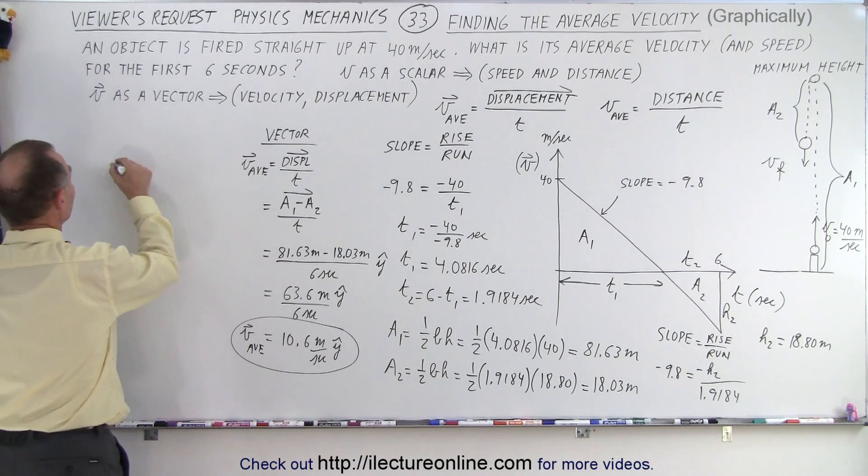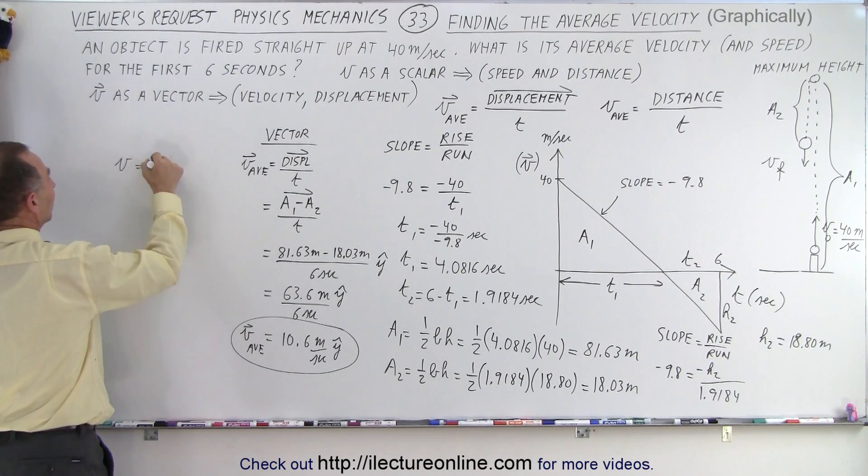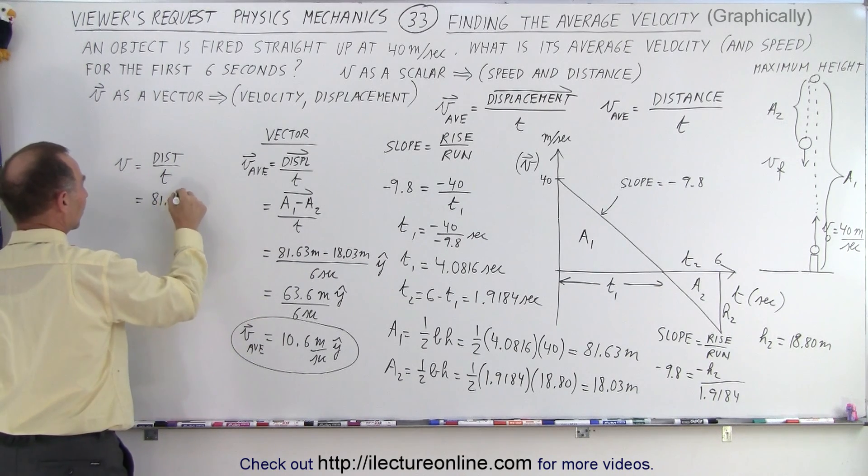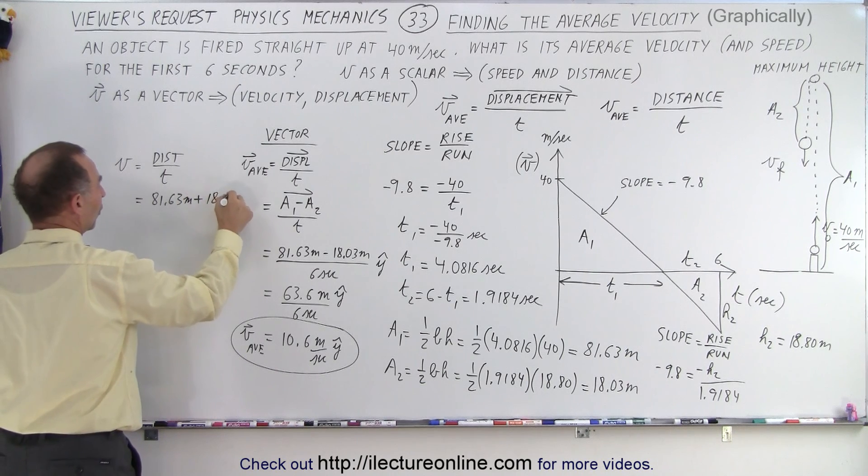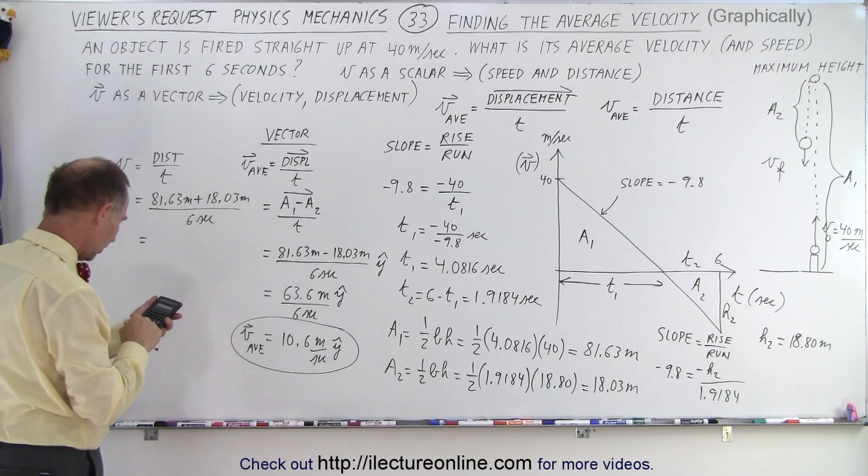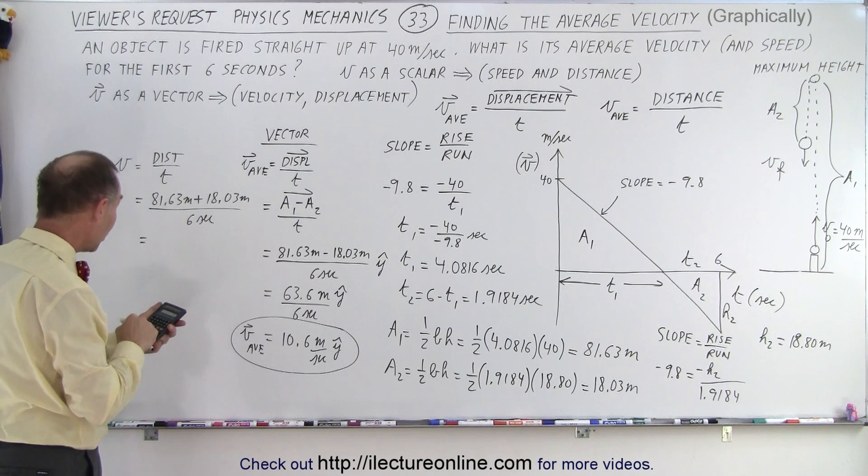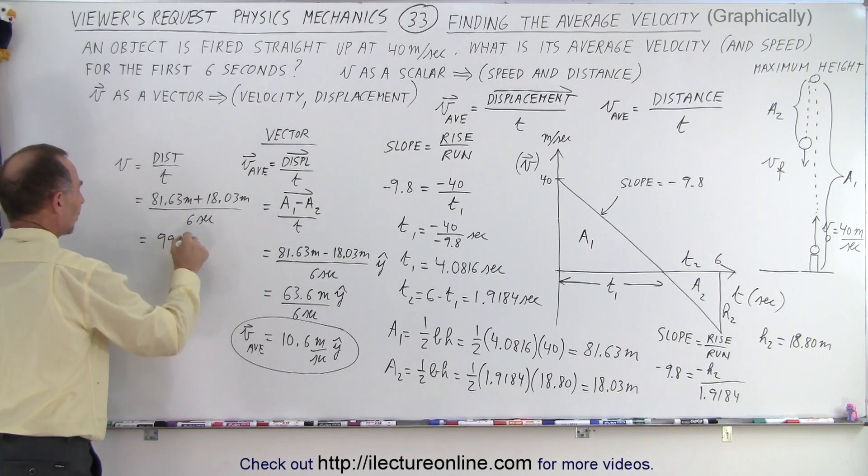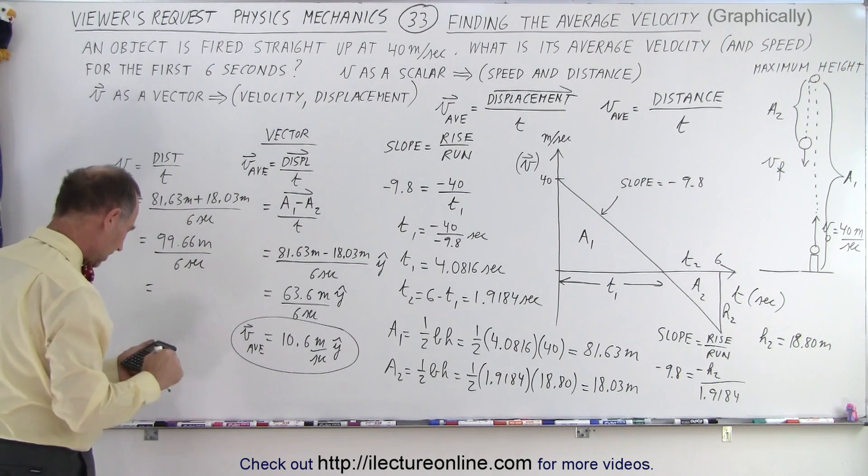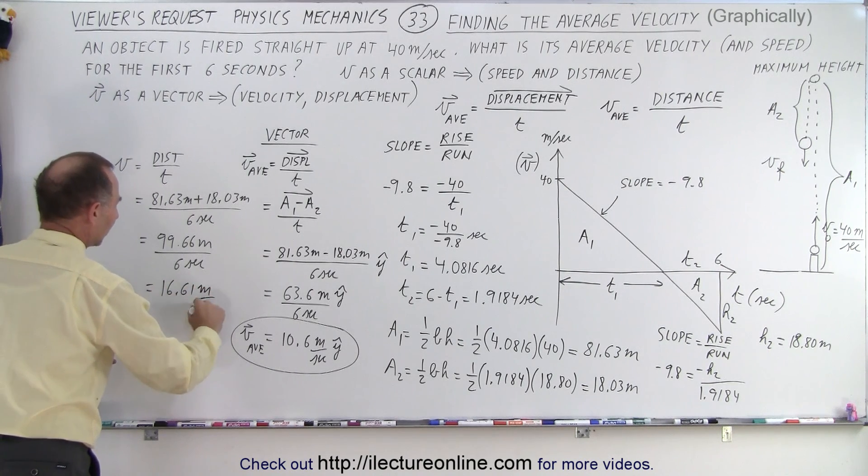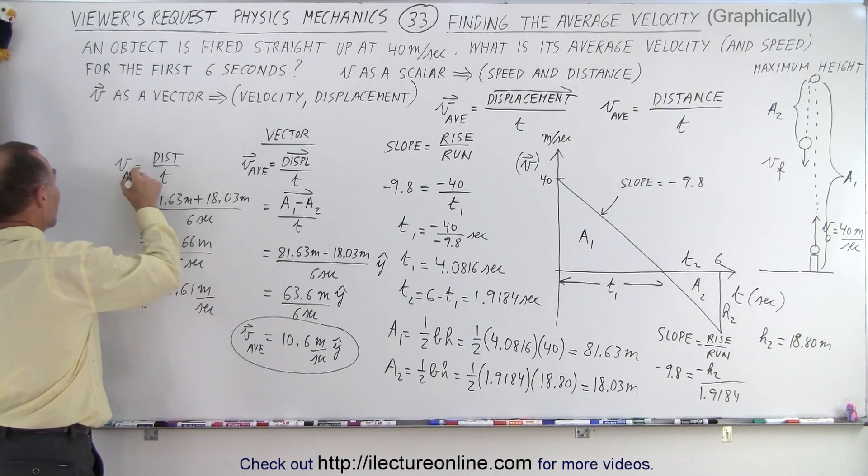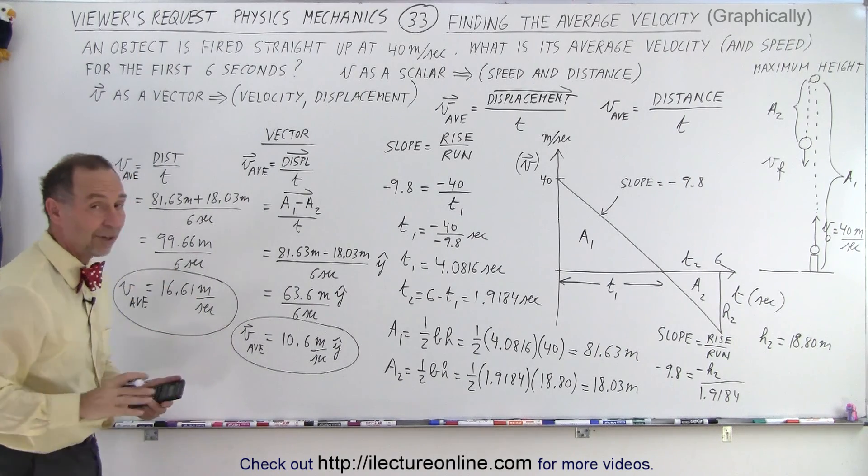As a scalar quantity, the average speed is going to be equal to the distance divided by the time. In this case we have to add the two together. It'll be 81.63 meters plus 18.03 meters all divided by 6 seconds, which gives us 99.66 meters divided by 6 seconds, and the average there would be 16.61 meters per second average speed.